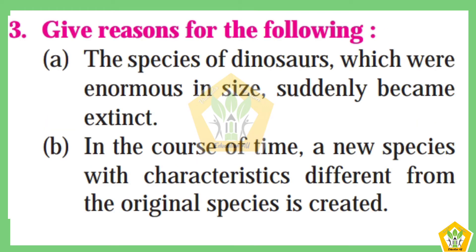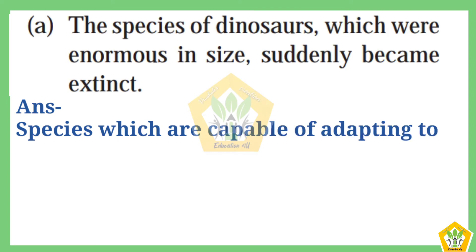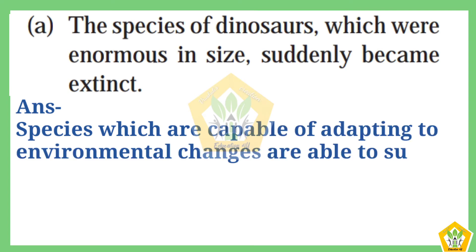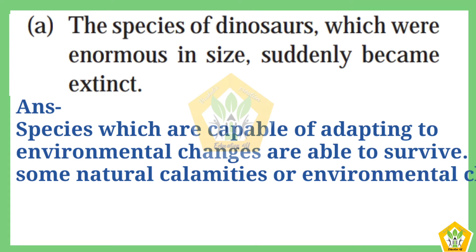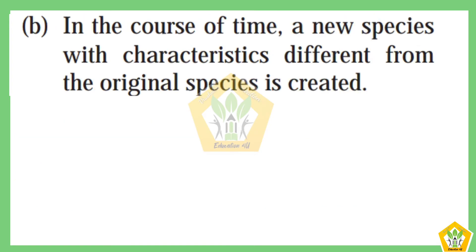Question number three: Give reasons for the following. A) The species of dinosaurs, which were large in size, suddenly became extinct. Answer: Species which are capable of adapting to environmental changes are able to survive. Some natural calamities or environmental changes led to the extinction of dinosaurs.